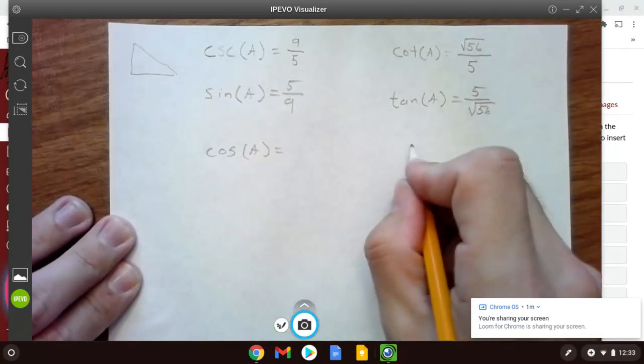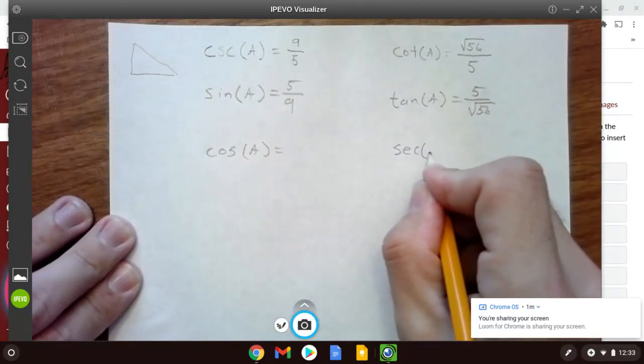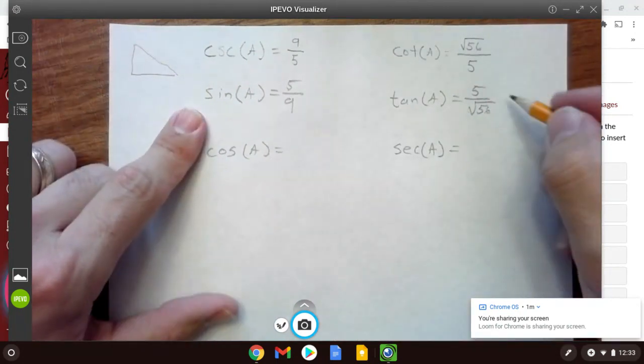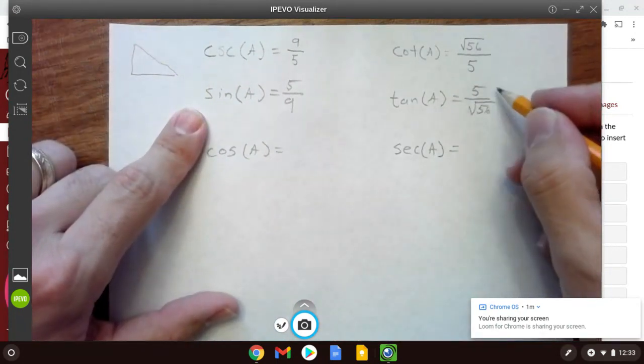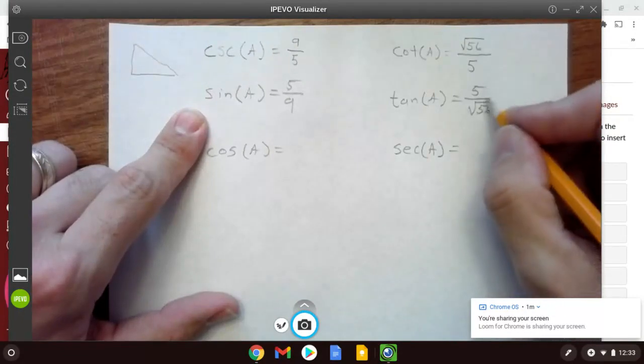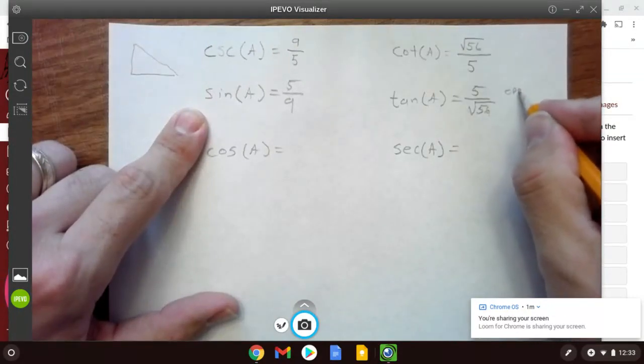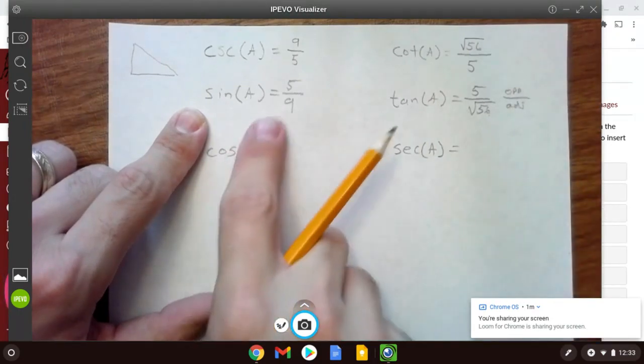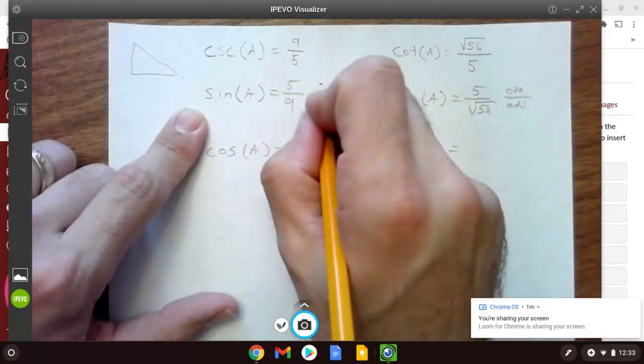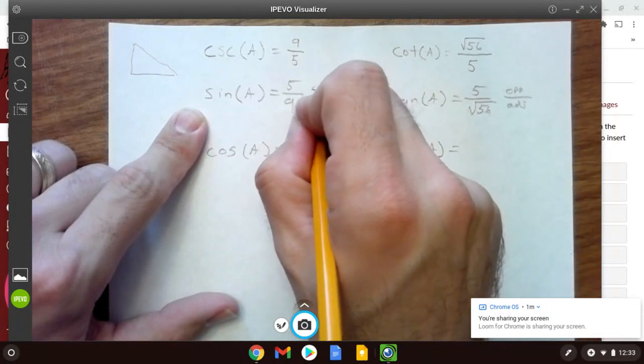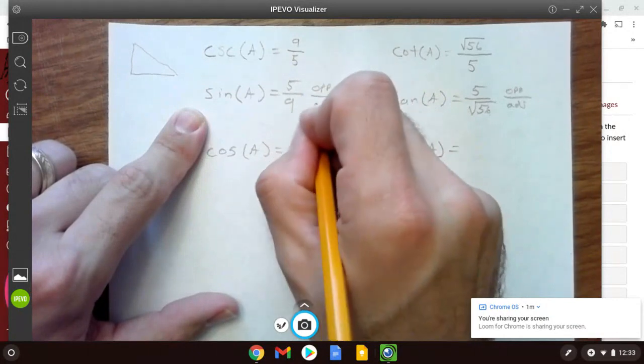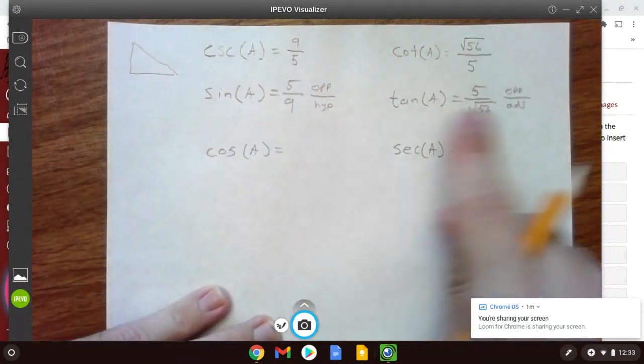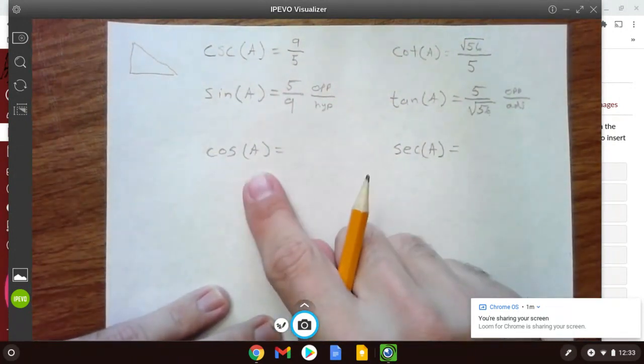Cosine and secant. Obviously these two are just reciprocals of each other. So because we know that tangent is 5 over this, and tangent is equal to opposite over the adjacent, and sine is equal to the opposite over the hypotenuse, I can kind of pull from each of these to figure out my cosine.